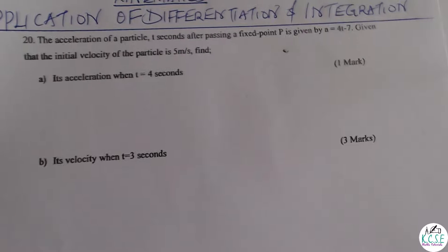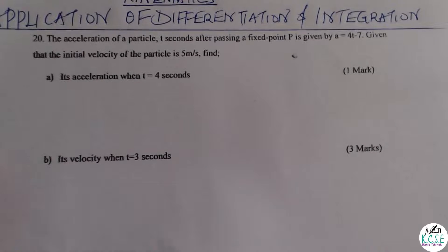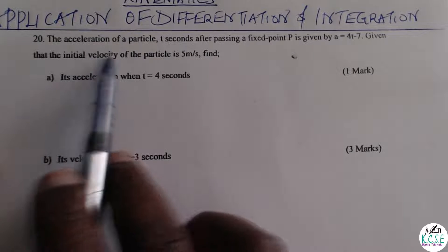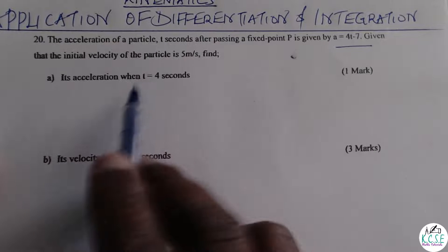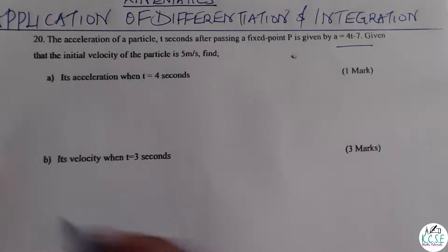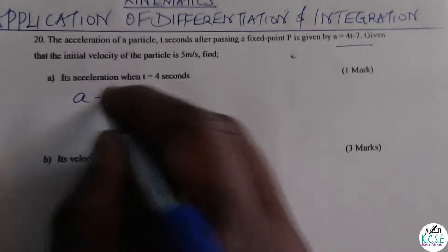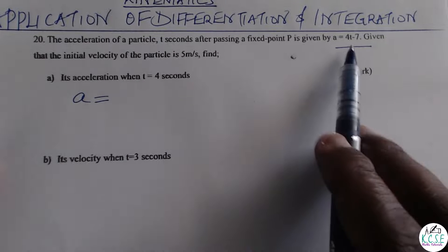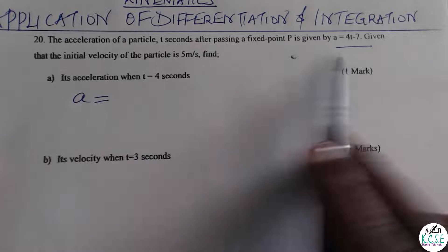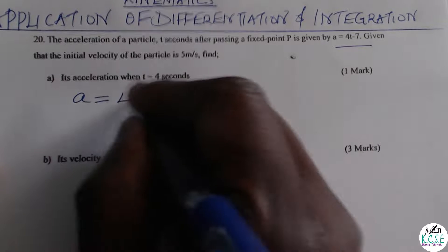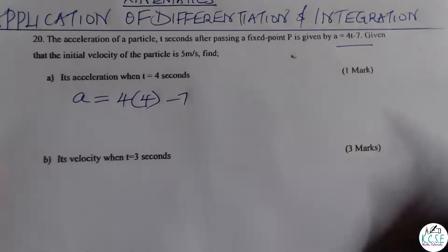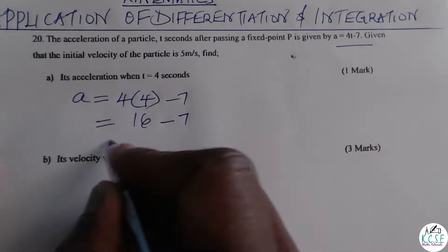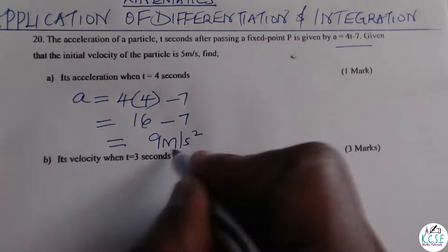Let's go to the first part and solve it. This one is straightforward. You're given the acceleration expression and required to find acceleration when t equals 4 seconds. Just substitute t with 4: so 4 multiplied by 4, then subtract 7. This gives 16 subtract 7, which equals 9 meters per second squared.